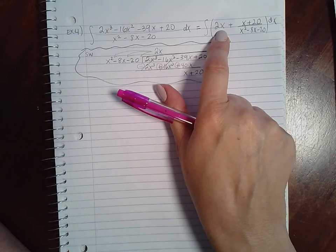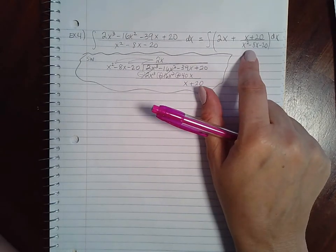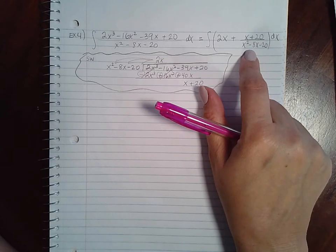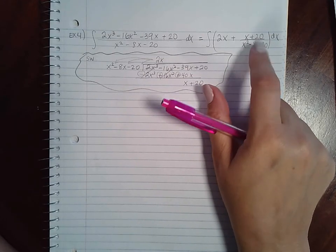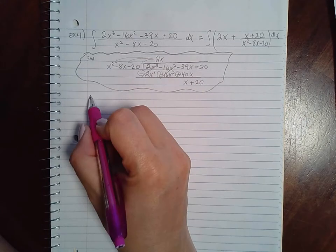Now 2x is not a big deal to integrate. However, this fraction is going to be a problem to integrate. So if we do the partial fraction decomposition, it has to be done just on this part. So again, more side work.